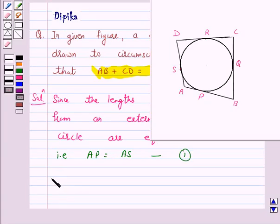Similarly, lengths of two tangents drawn from B, which are BP and BQ, are equal. Let us give this as number 2.